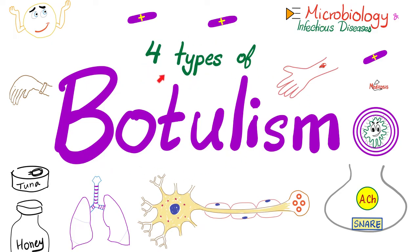How many types of botulism do we have? We have four. Number one, foodborne botulism, also known as classic botulism. Number two, infant botulism. Number three, wound botulism. And number four is inhalation botulism.